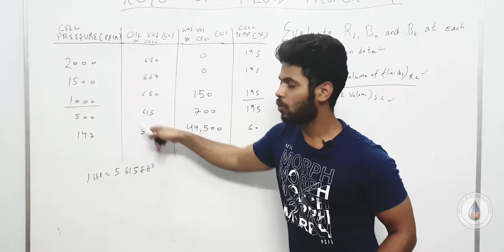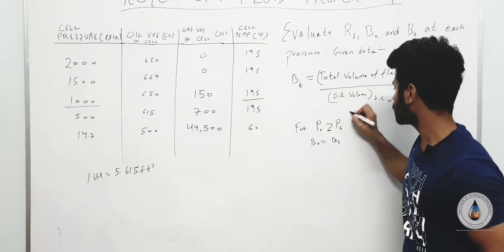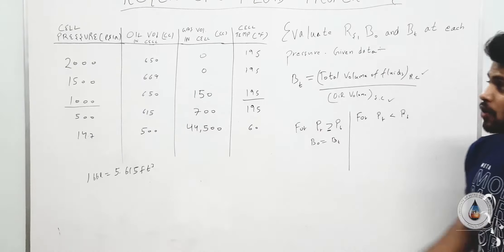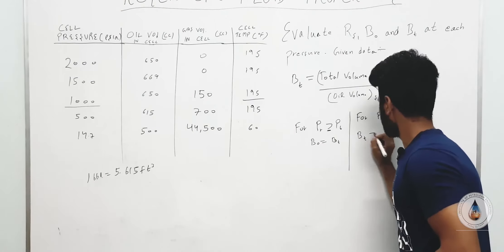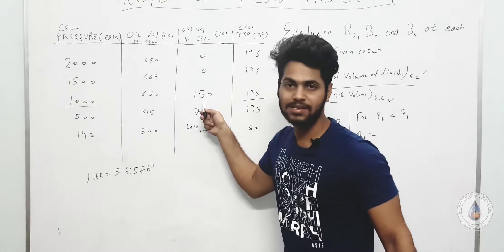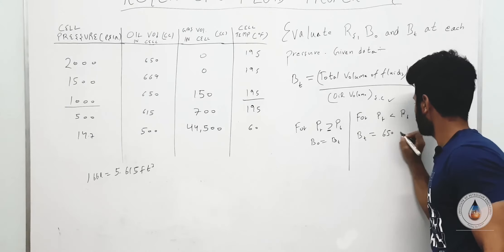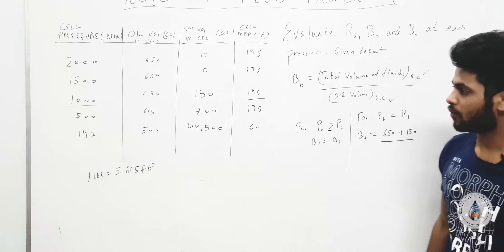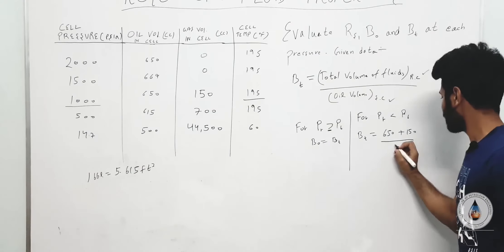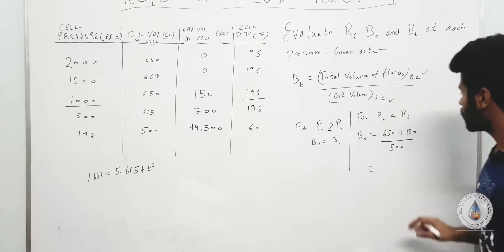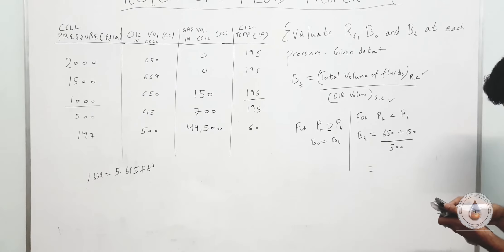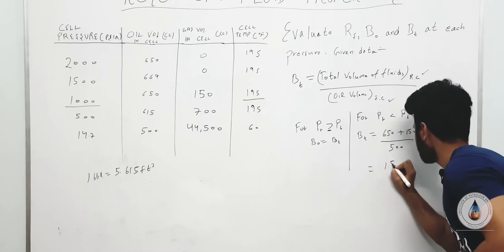For 1000 PSIA, the total volume of fluid is oil plus gas at reservoir conditions: 650 cc + 150 cc = 800 cc. Dividing by oil volume at surface condition (500 cc): Bt = 800 / 500 = 1.59. Units are reservoir cc per surface cc, which can be written as barrel per stock tank barrel. So Bt at 1000 PSIA = 1.59 RB/STB.